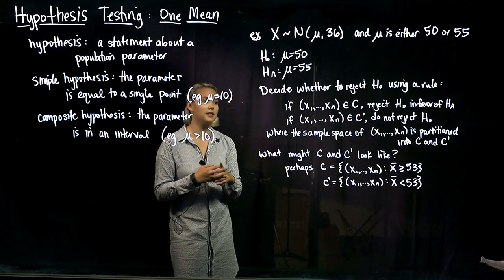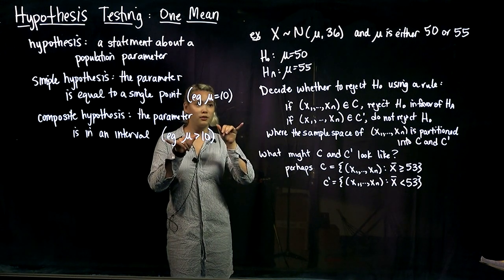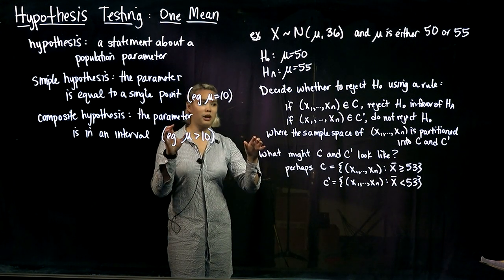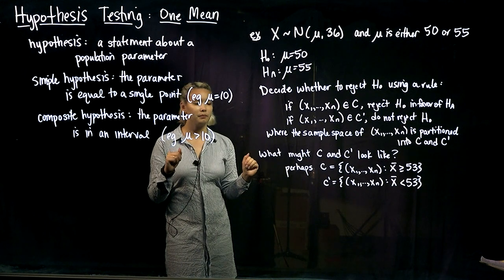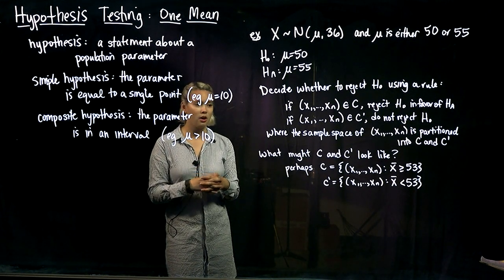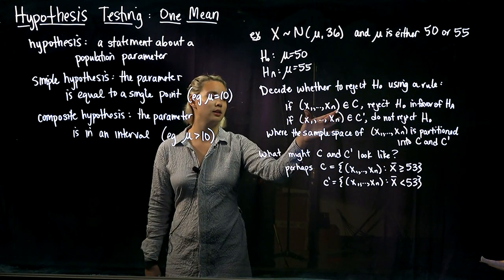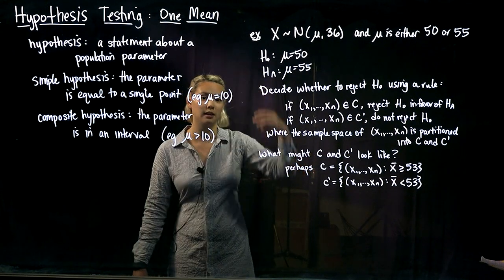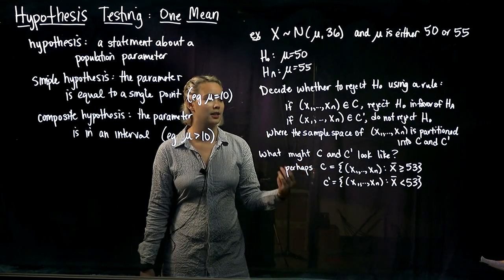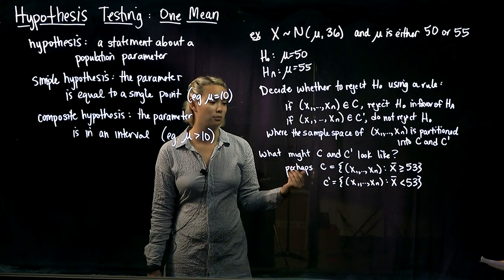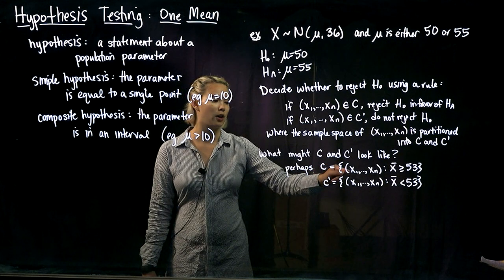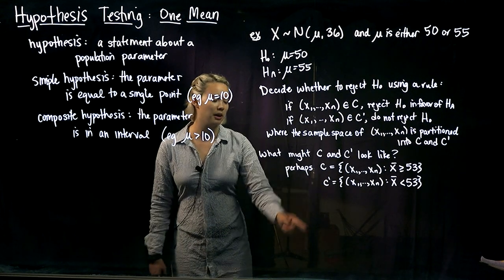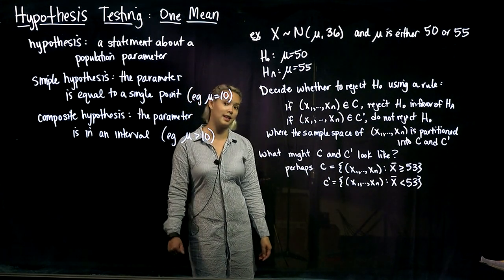We've partitioned our sample space into C and C prime: if x1 through xn lands in C, we reject the null; if it lands in C prime, we do not reject the null. We often create a test statistic from our sample — since we're talking about one population mean, our test statistic would be the sample mean x-bar. So C could be the set of all x1 through xn such that x-bar is greater than or equal to 53, and C prime is the set where x-bar is less than 53.